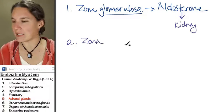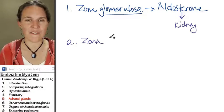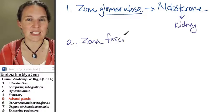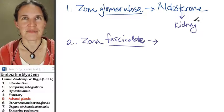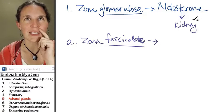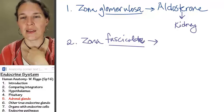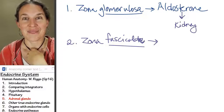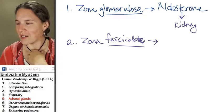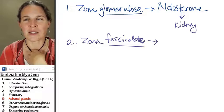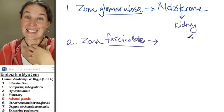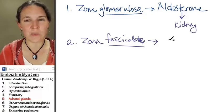Zona middle layer is called zona fasciculata. Fasciculata. Fascicu, bring me a latte, please. Maybe I've had too many lattes. Please fasciculata. I'm not sure how we're going to exactly remember this from fascic lattes, but this is a biggie. The middle layer produces cortisol.